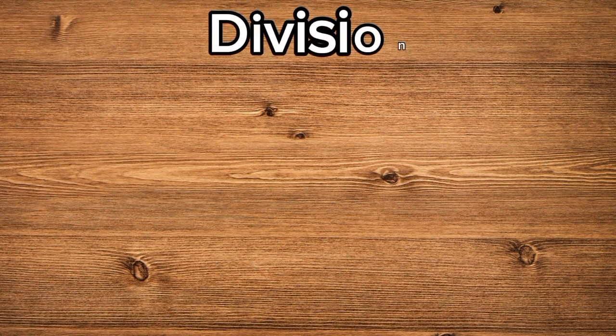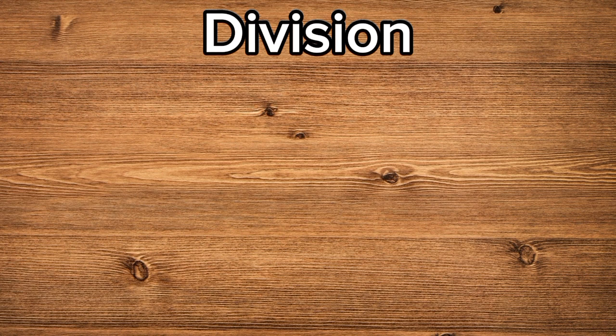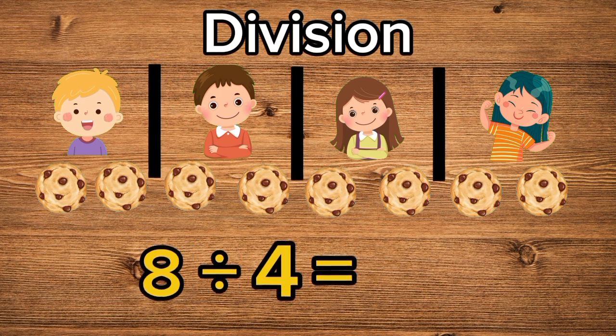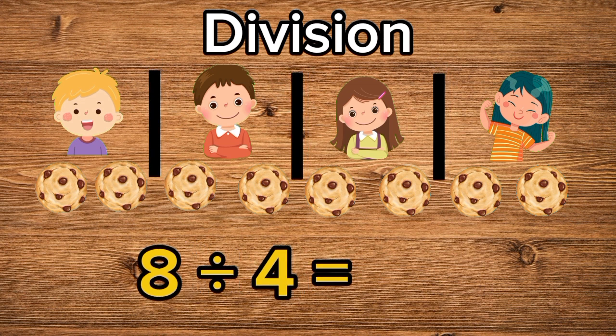And finally, we have division. Division is when we share equally. Imagine we have eight cookies and four friends. That's eight divided by four. Let's share them: one, two, three, four. Each friend gets two cookies.